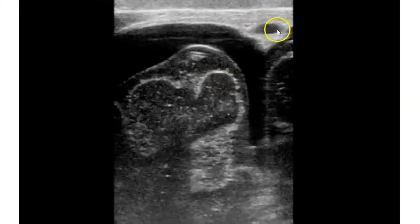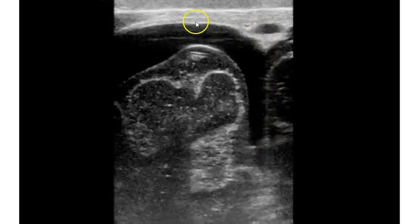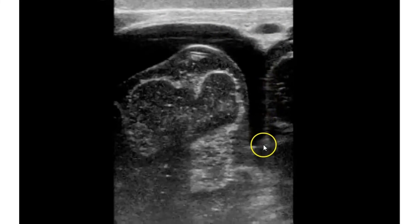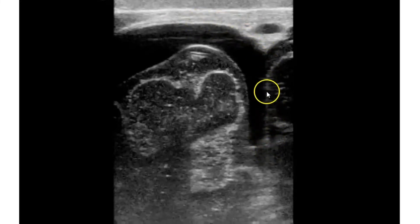Here's your superior sagittal sinus. This picture is in coronal — the interhemispheric fissure. Remember the dura is an invagination. When the dura invaginates into the center here, it's the interhemispheric fissure, also known as the falx cerebri.